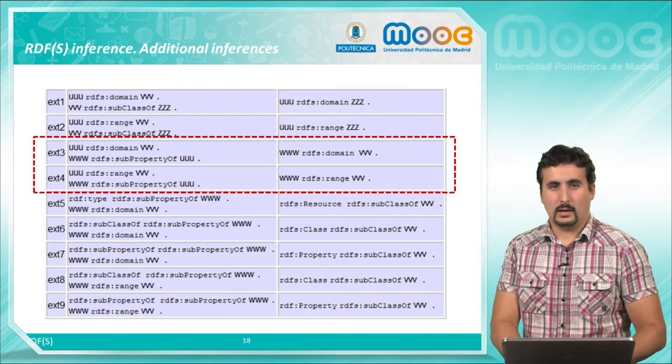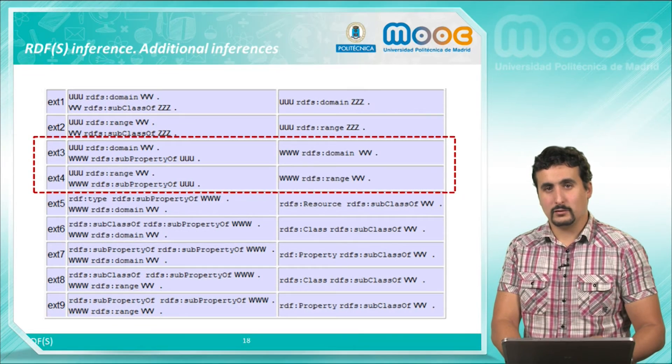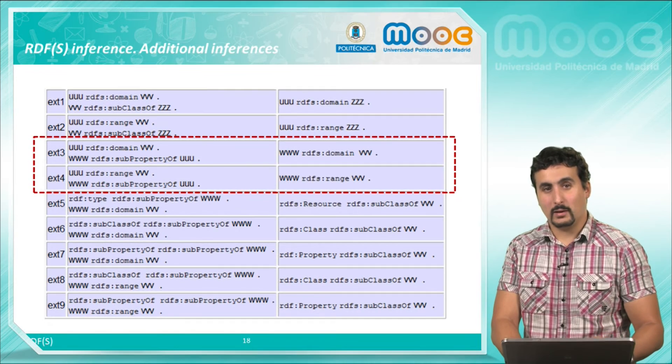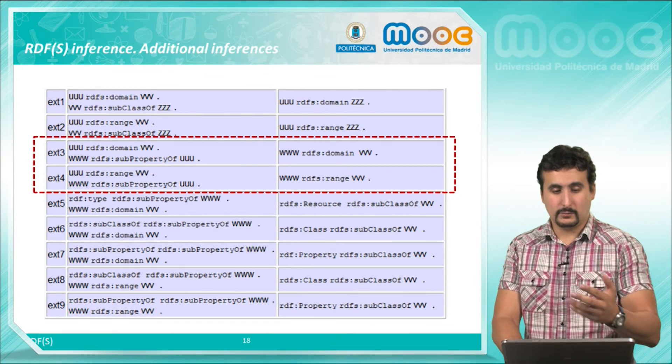The X3 and X4 rules imply that a subproperty inherits the domain and range of its parent property. In this case for example,